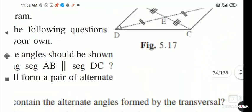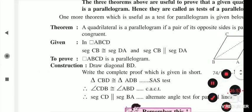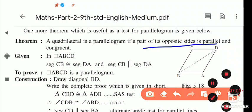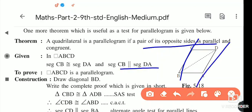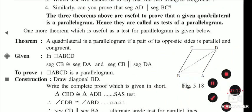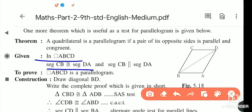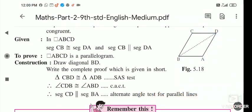Now we will see the next theorem: a quadrilateral is a parallelogram if a pair of its opposite sides is parallel and congruent — meaning CB is parallel to DA. In quadrilateral ABCD, CB is congruent to DA and CB is parallel to DA — both are given. We have to prove that the figure is a parallelogram.